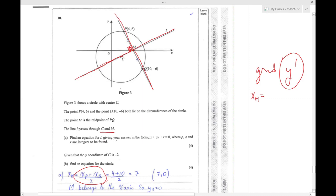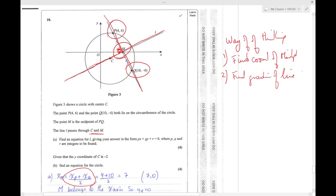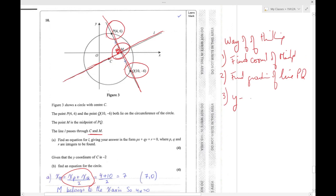Find an equation for L giving your answer... So you need to find an equation for L. If L is the perpendicular bisector, it means you have to find the coordinates of the midpoint and you have to know the gradient of this line. Way of thinking: one, find coordinates of midpoint; two, find gradient of line PQ. Once you have this, then you can use Y minus Y of M equals gradient times X minus X of M.